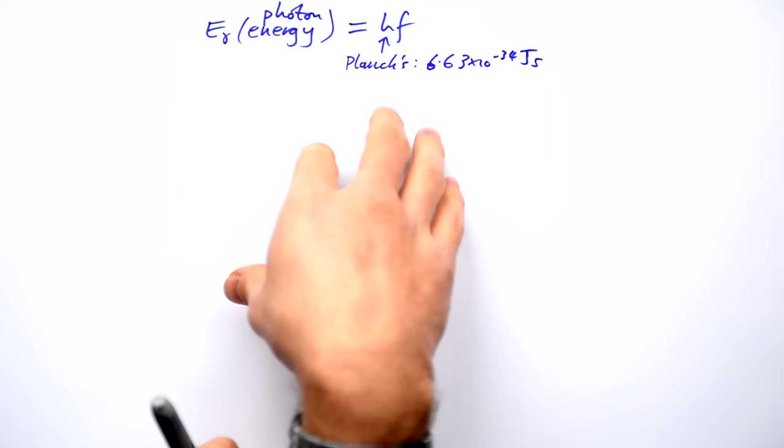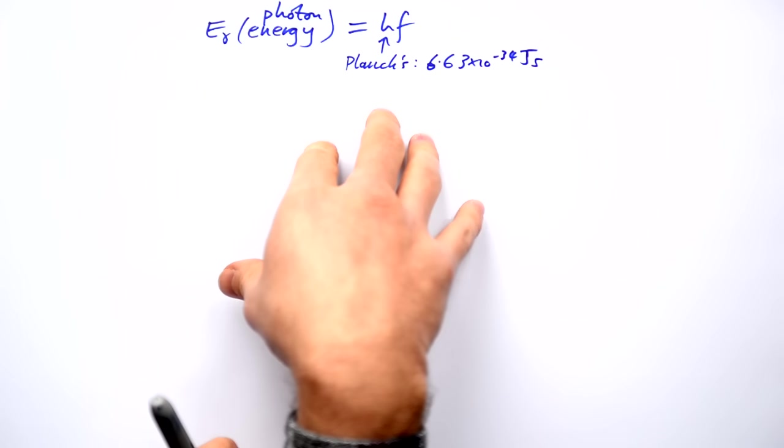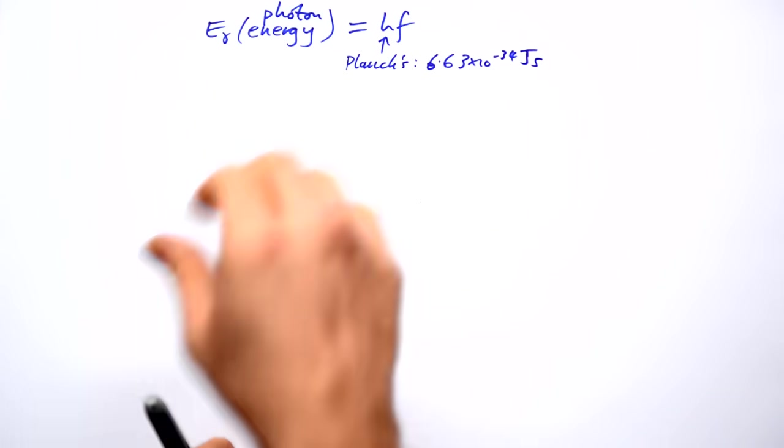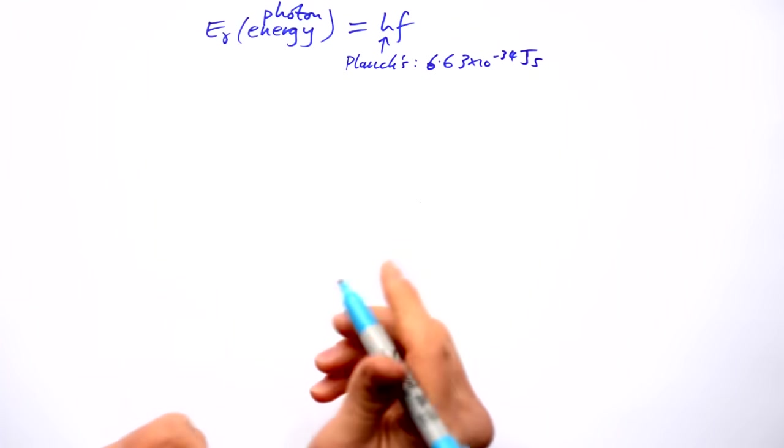Now in the photoelectric effect we had electrons in metals absorbing photons, but it doesn't have to be a metal, it can be any electron.